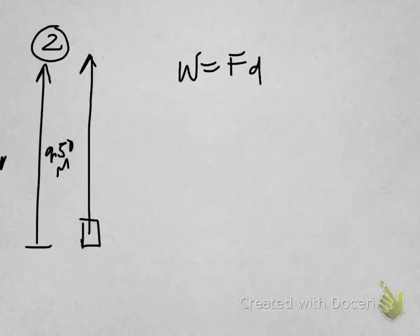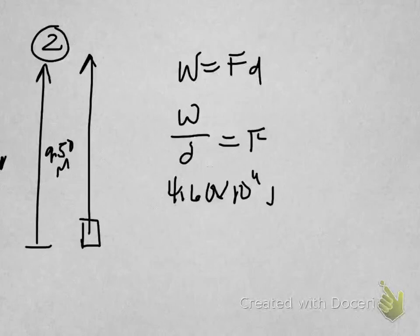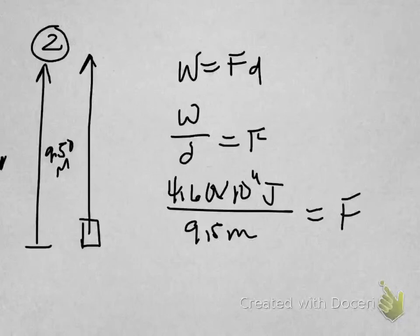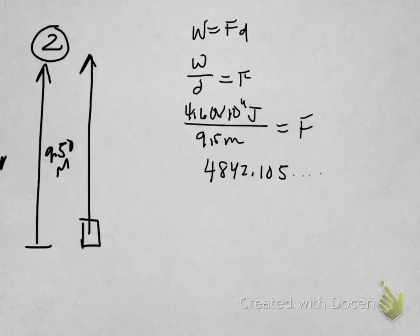Work is equal to the force times the distance. Work divided by the distance is equal to the force exerted on them. 4.60 times 10 to the 4th joules over 9.5 meters gives you the force exerted on them. We get a raw answer of 4842.105. We sig fig it out. It gets three sig figs because their distance was actually 9.50. So 4840 meters. Some of you went ahead and put it in scientific notation. You can do that. It doesn't matter. So this is easy three-part algebra.